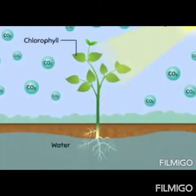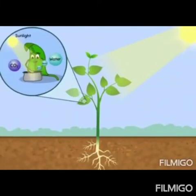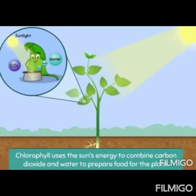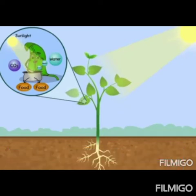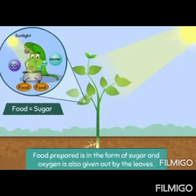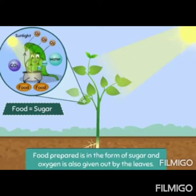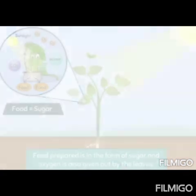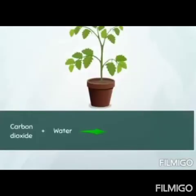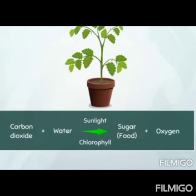And then the recipe is complete. Just like how your mother cooks food in the kitchen, the chlorophyll uses the sun's energy to combine carbon dioxide and water to prepare food for the plant. The food prepared is in the form of sugar, and oxygen is also given out by the leaves in the process. Thus, the process of photosynthesis in the leaves can be summarised as shown.